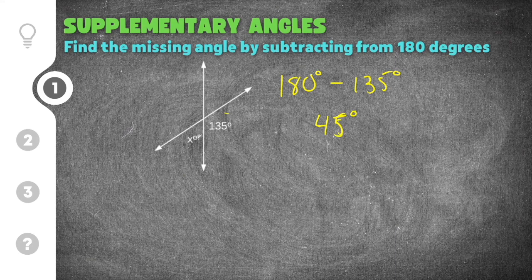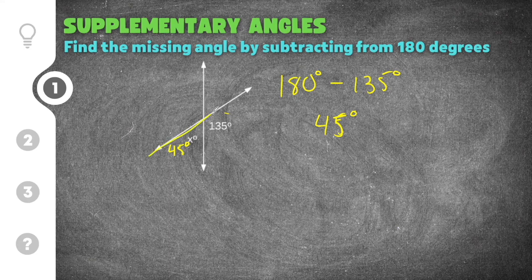And 180 degrees minus 135 degrees is 45 degrees. So our answer has to be 45 degrees because these two angles added together form a straight line which we know has to be equal to 180 degrees.